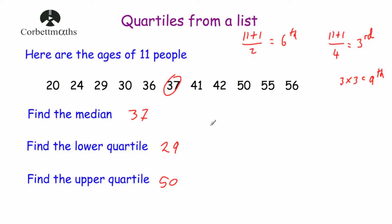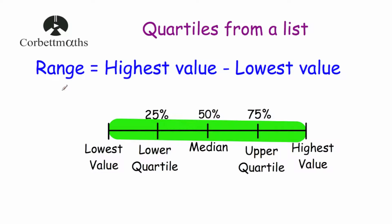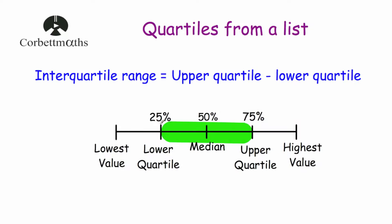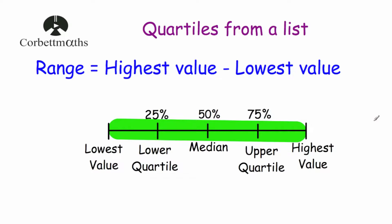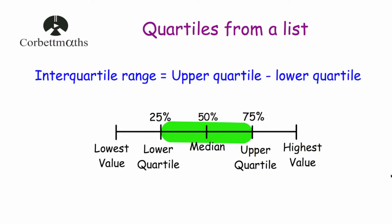Now let's talk about the interquartile range. Let's start by looking at the range — in maths we measure how much data is spread out by taking the highest value and subtracting the lowest value. Sometimes instead of the range, we focus on the middle 50% of the data: we look at the lower quartile and the upper quartile and subtract those values to find how spread out the middle 50% is. The interquartile range is useful because sometimes the range can be affected by outliers — one really large number can give a very large range. But the interquartile range excludes outliers and extreme values, making it a more reliable measure of spread.